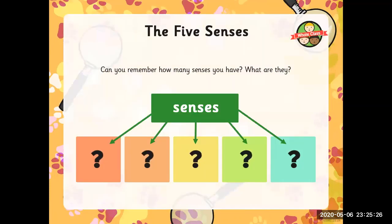Get ready with your writing pad and writing tools — we're going to do a mind map of senses. Write 'senses' at the centre of a clean page, then ink down your thoughts. Can you remember how many senses you have? If you can, fantastic — give yourself a pat on the back. What are they? Write down the five senses that you can remember.